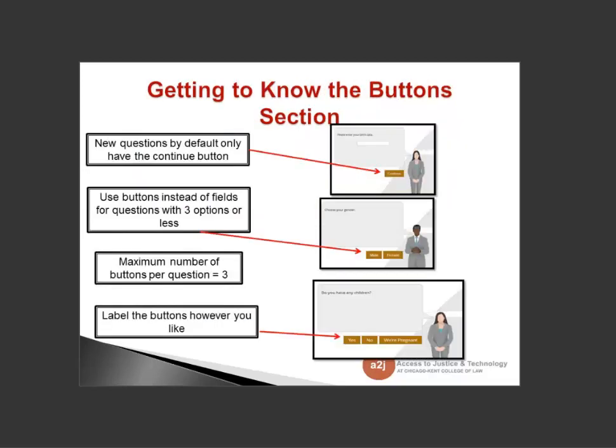New questions by default only have the continue button. You use buttons instead of fields for questions with three options or fewer, or when you don't need a typed response. The maximum number of buttons is three, but you can label them however you'd like — for example 'Yes', 'No', or 'We're pregnant'. There is a size restriction: if the button label is too long, it throws off the spacing, so keep labels concise.